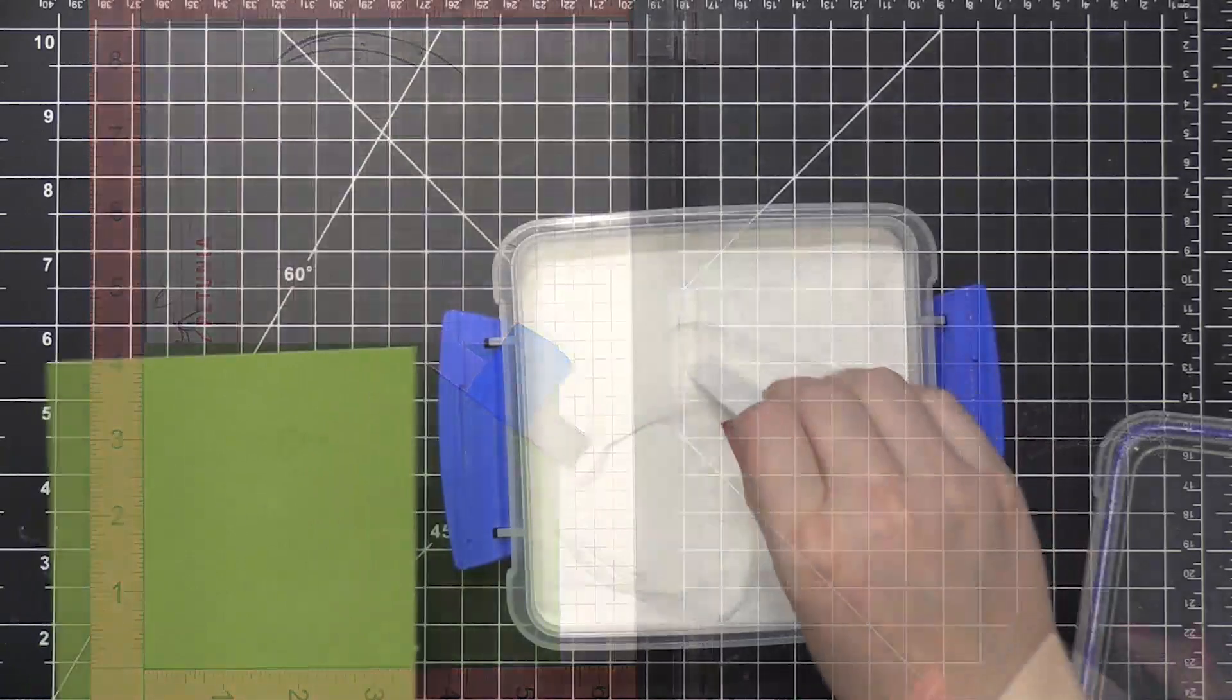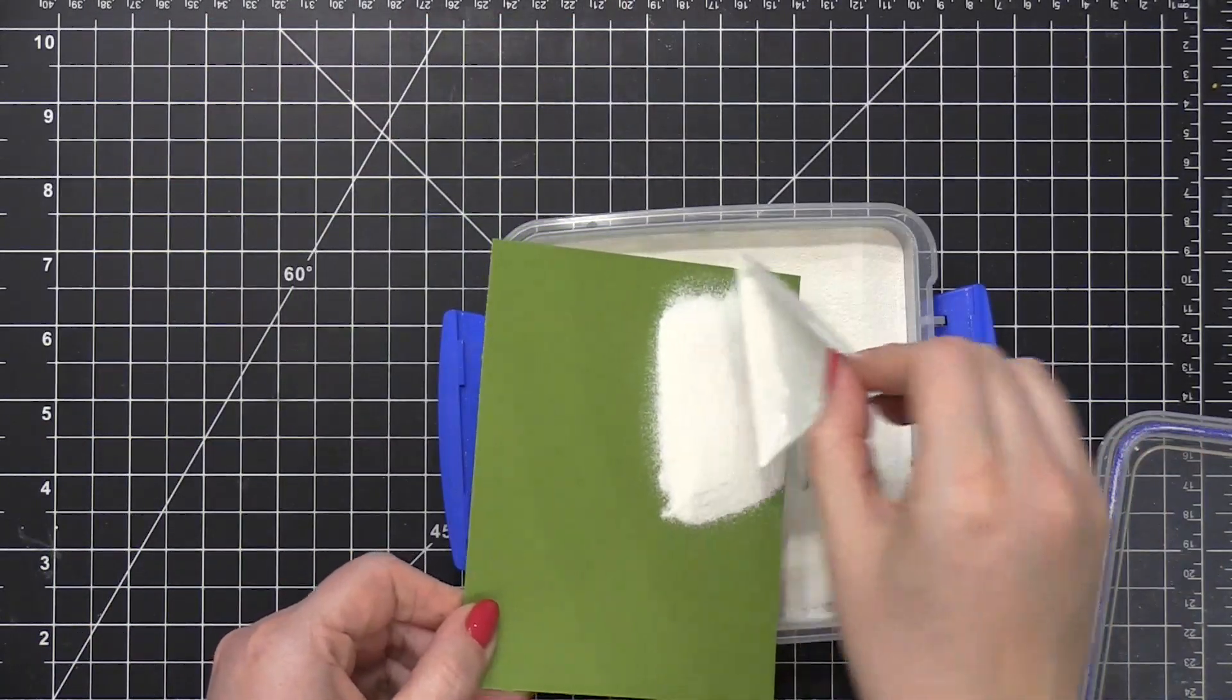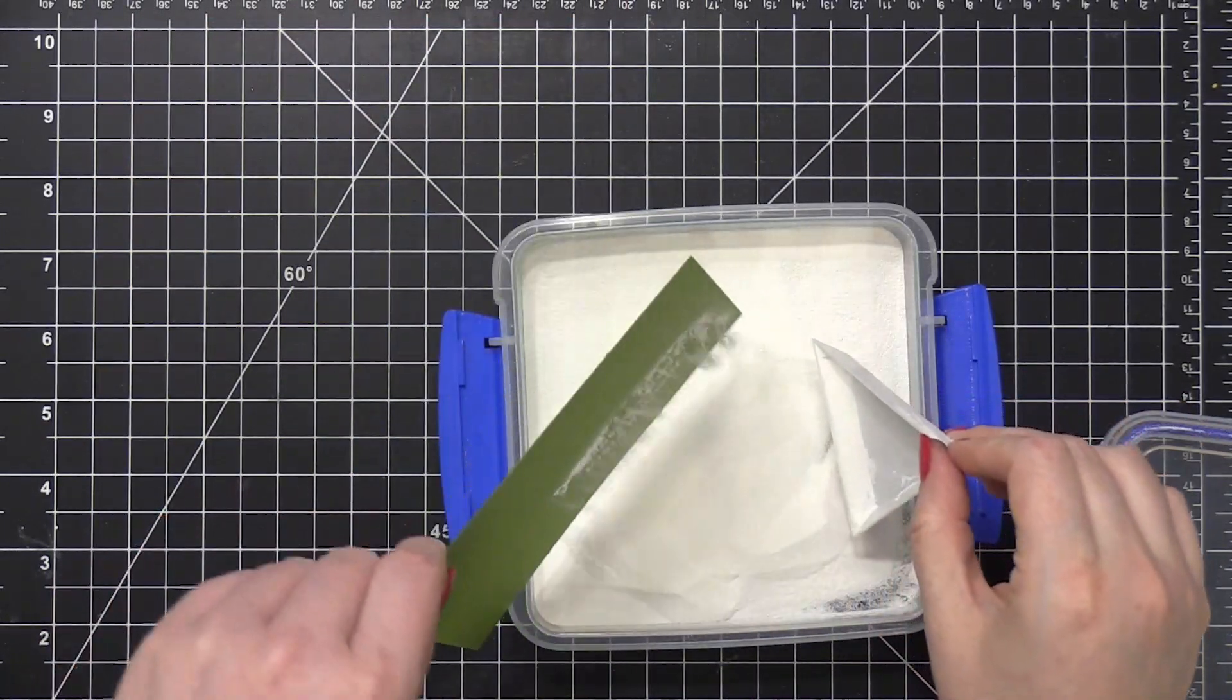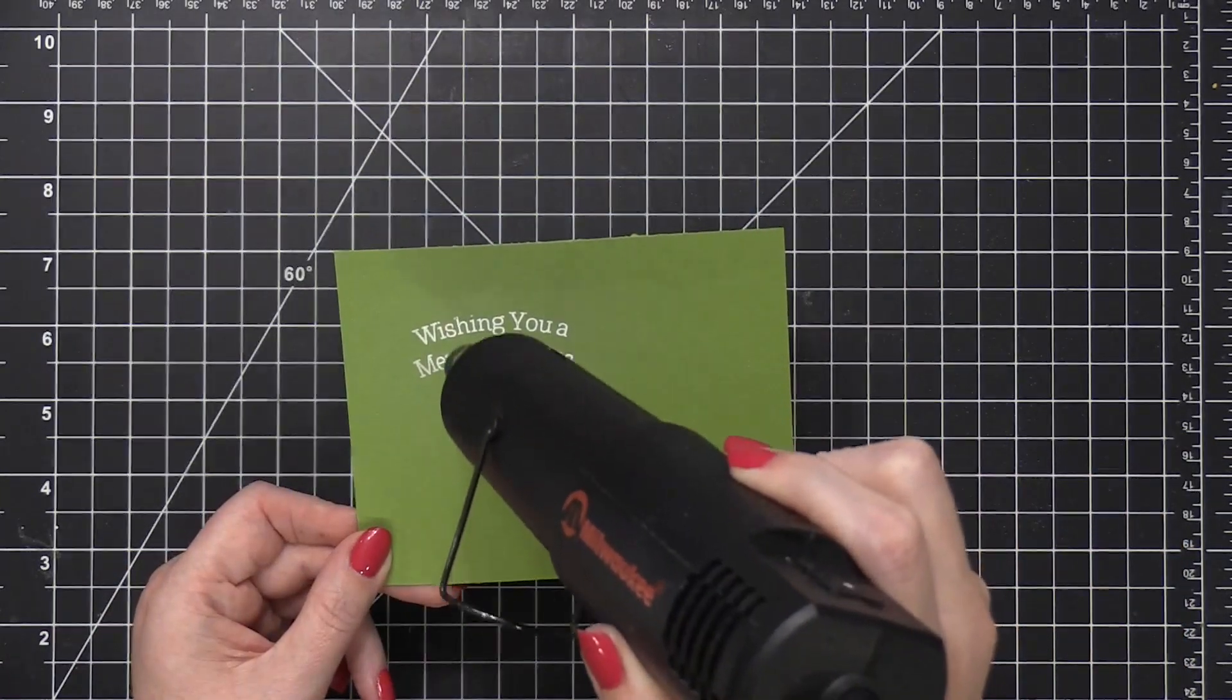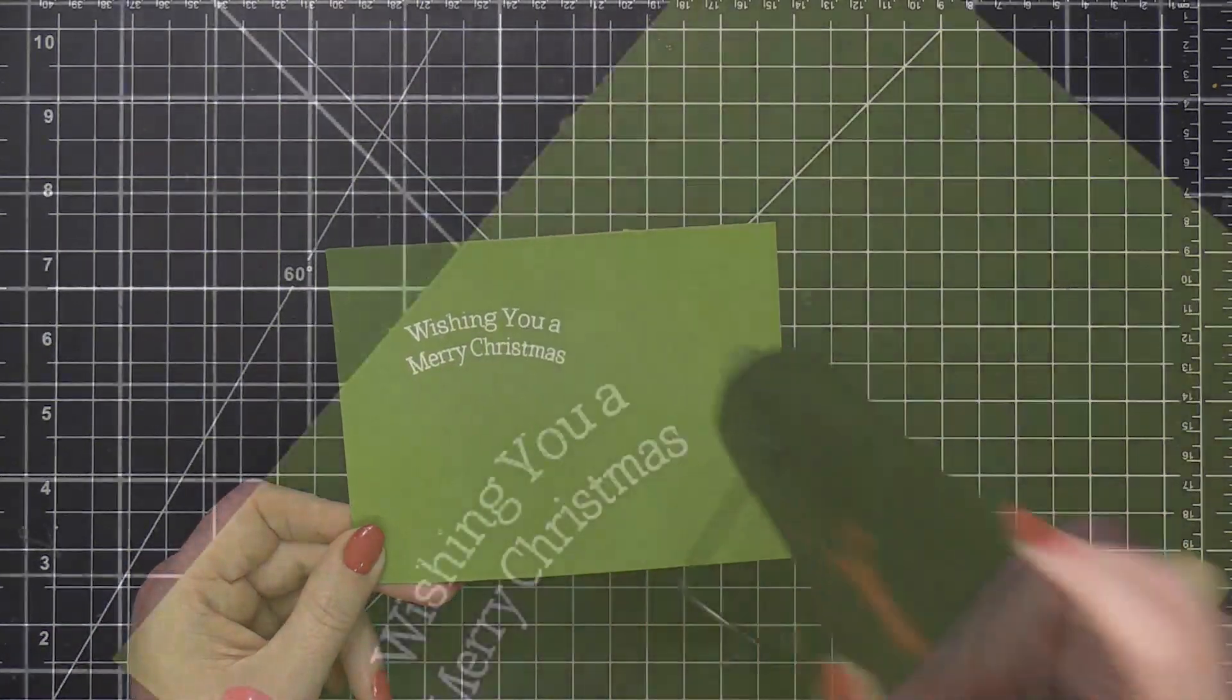I'll remove that from my Misti stamp positioning tool and then sprinkle on some Alabaster embossing powder from Brutus Monroe. I'll tap off the excess and then heat set this with a heat tool until it's smooth and melted.